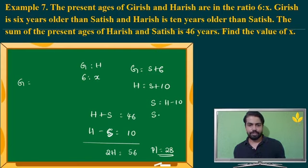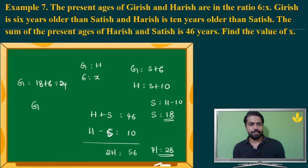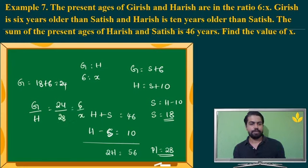So Satish's age is 18 years. Girish's age is 18 plus 6, which is 24. Now the ratio G by H equals 24 by 28. It is given as 6 by X. Simplifying 24 by 28 gives 6 by 7, so X is equal to 7. That is the answer.